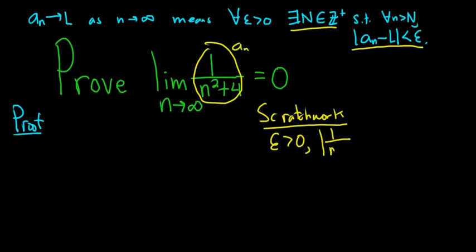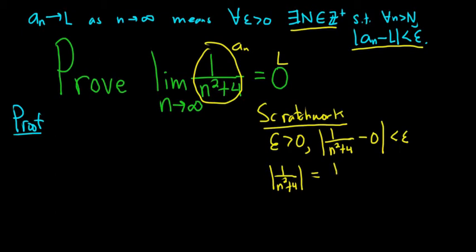So we write 1 over n squared plus 4 minus — and our L is 0 — so minus 0. We want this to be less than epsilon. I'll write it down again: 1 over n squared plus 4. We can drop the absolute value because 1 over n squared plus 4 is always positive, so we don't need an absolute value.